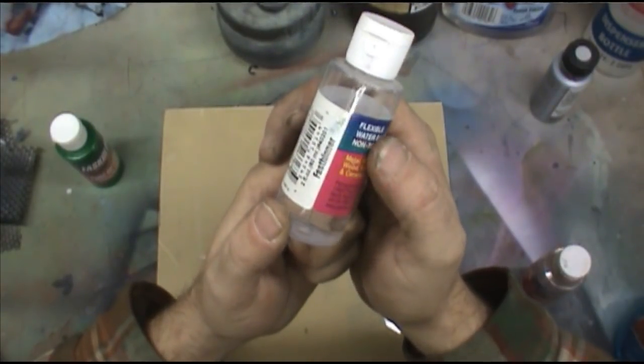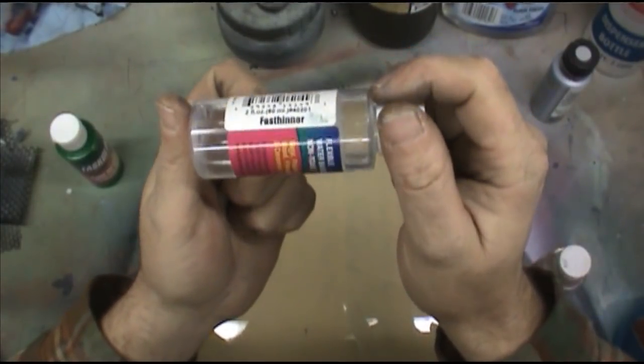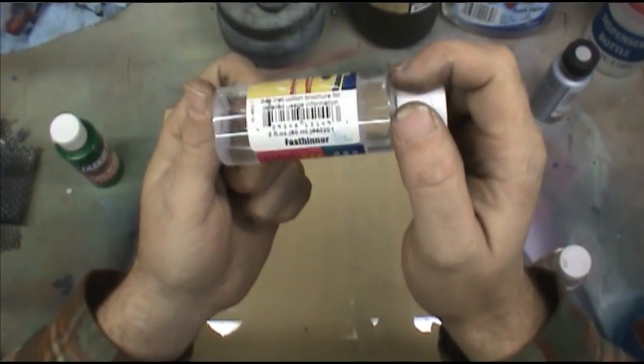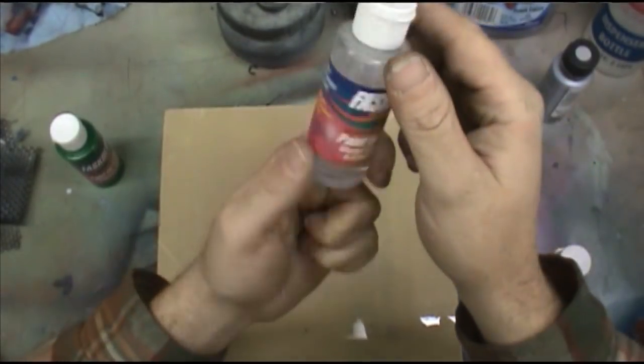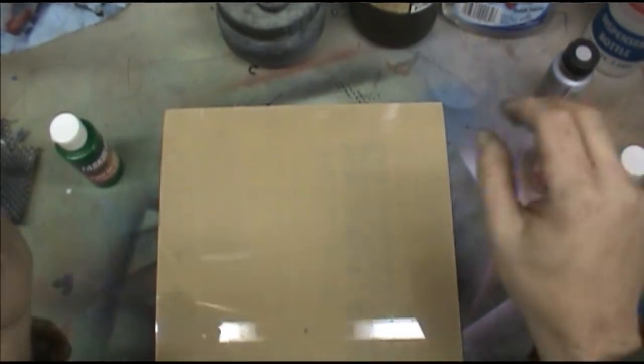If you want to go with a commercial thinner, I would recommend looking at the Auto Air 4011 because you can buy it in a lot bigger volume. In turn, your price is a lot better on it. So these are some of the different types of thinners that can be used on acrylic paints.